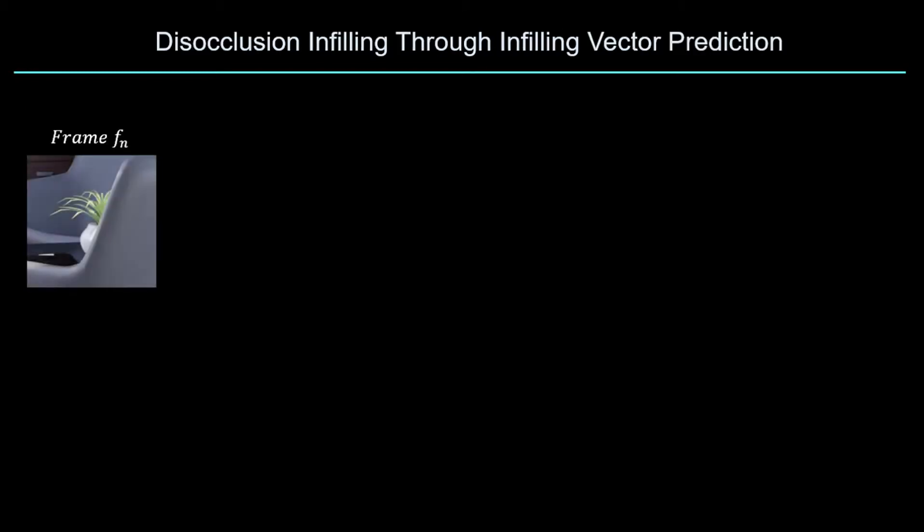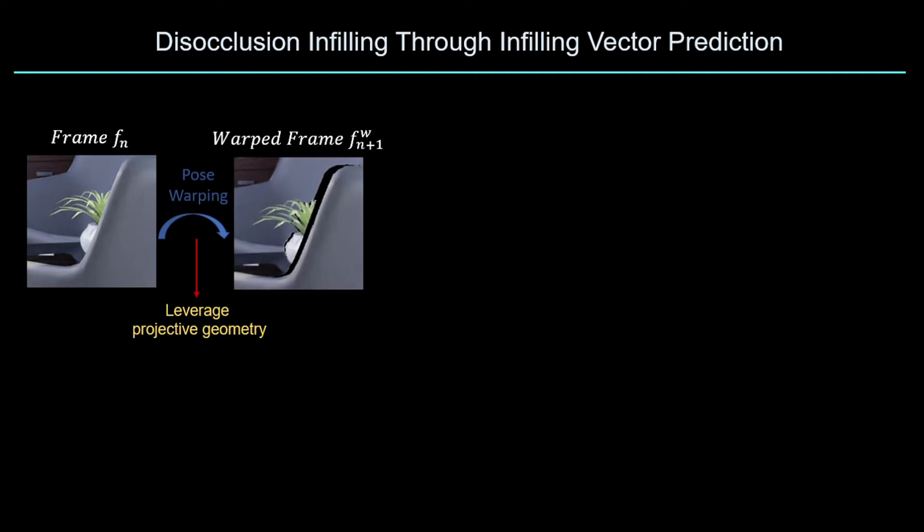When rendered frame n and the new camera pose of view n plus one is available, large parts of the new view can be reconstructed using projective geometry to obtain frame n plus one. However, this cannot recover the portions of scene in frame n plus one that were occluded from view in frame n.